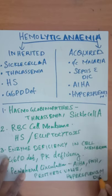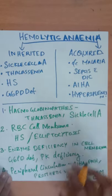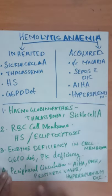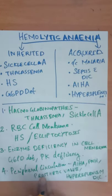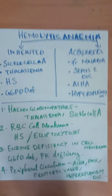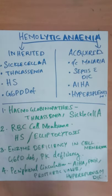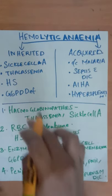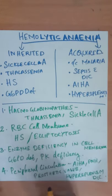So all the acquired causes can be written under peripheral circulation, and the first three reasons can be written under the inherited causes.